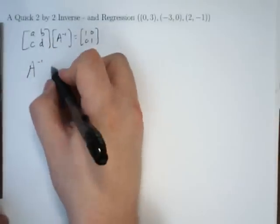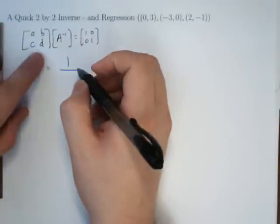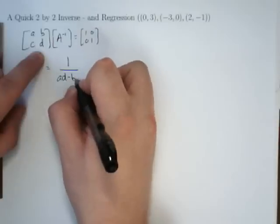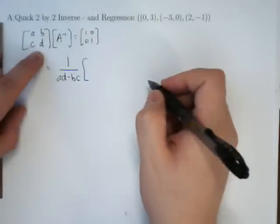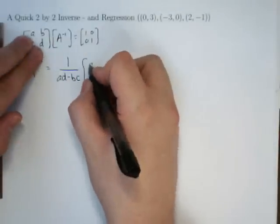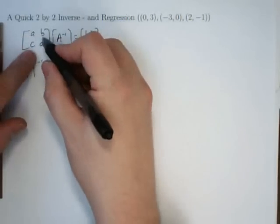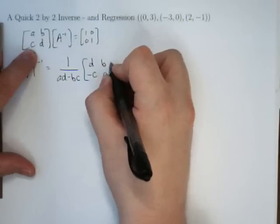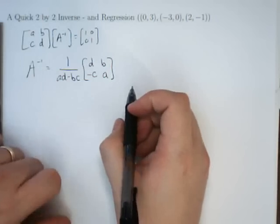The inverse can be found by using the determinant. The determinant of this matrix is AD minus BC. And then if I interchange the A and the D and change the sign on the C and the B, will this provide me with the inverse?